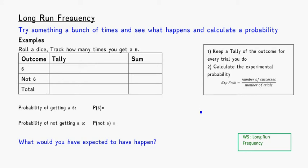Sometimes with probability, we run experiments and track things over a really long period of time. Long-run frequency is basically doing that. We try something a bunch of times and see what happens from it. We observe, and then from there we can calculate a probability.